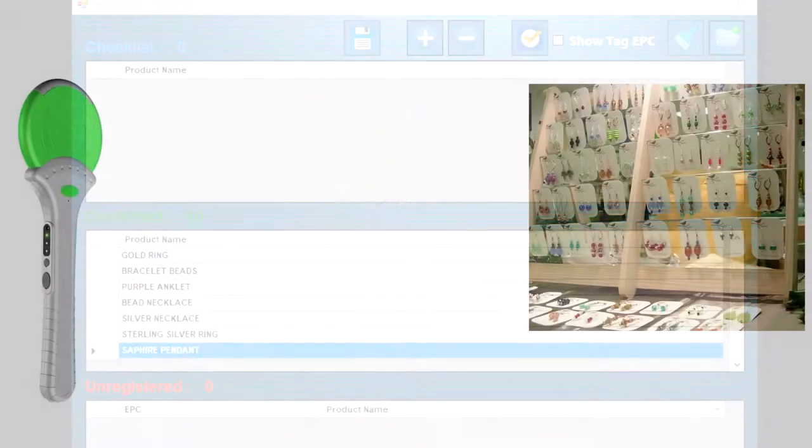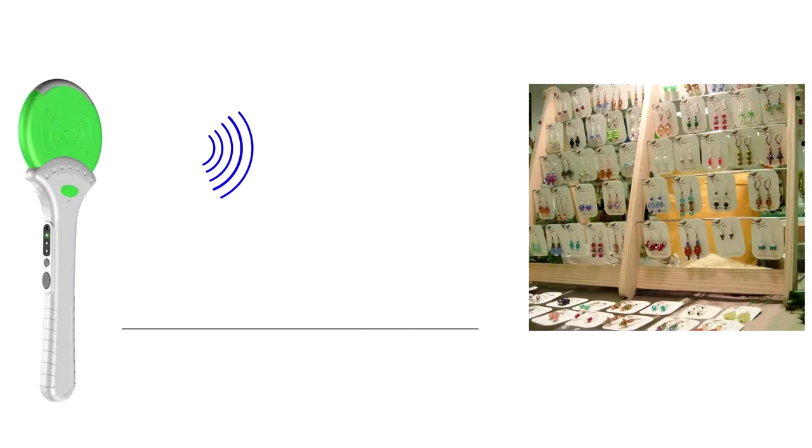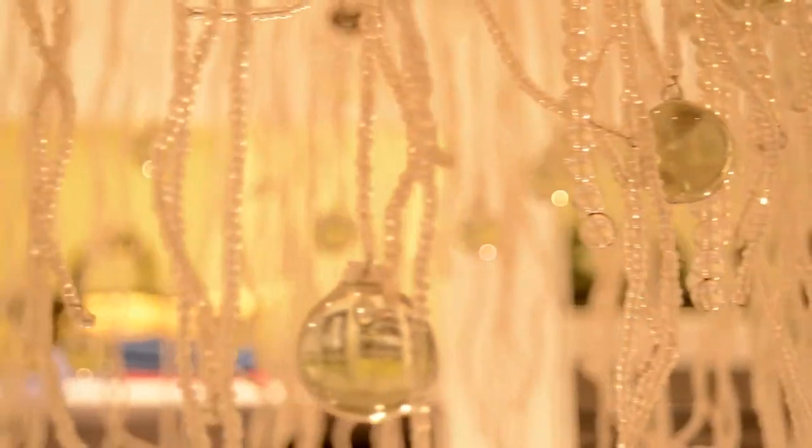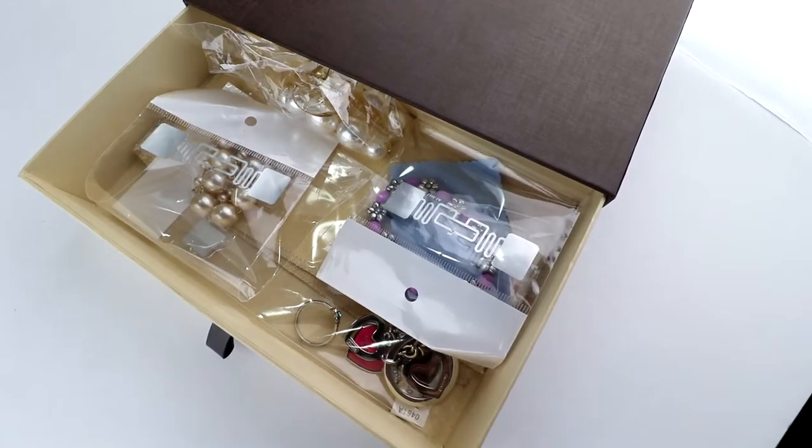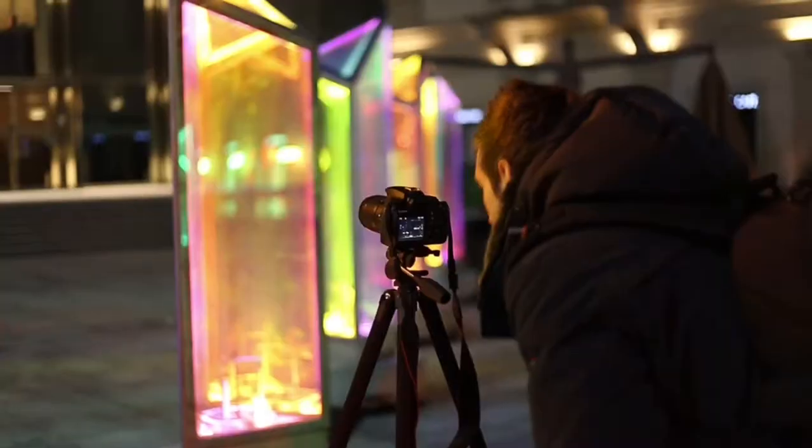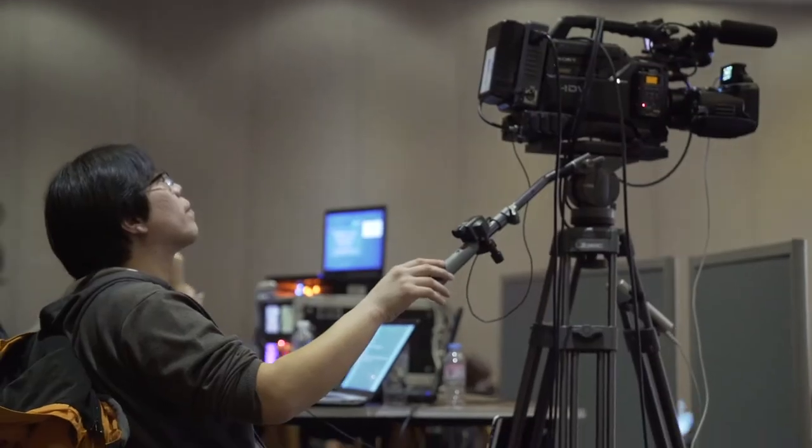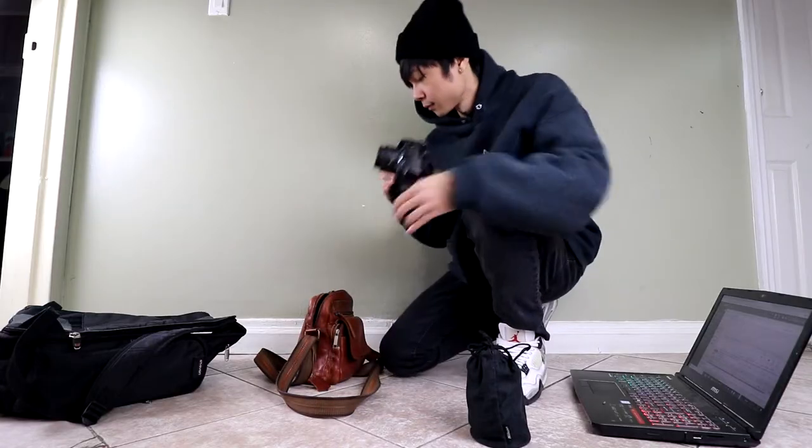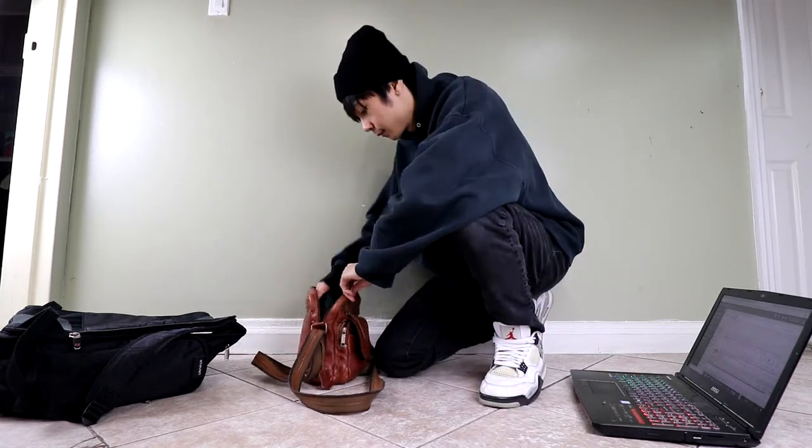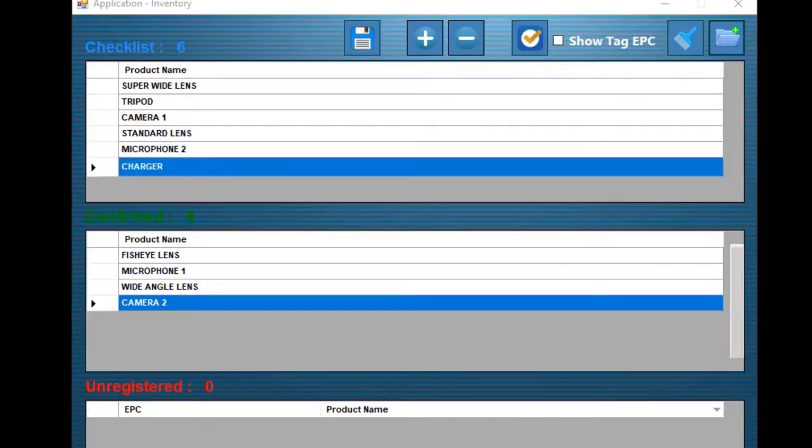The U100 can scan RFID tags up to 10 feet. This is ideal for businesses such as jewelry shops or stores on the go to ensure nothing was stolen throughout the day. This would also be useful for photographers, videographers, or perhaps even construction workers to ensure that no expensive equipment is left behind before leaving the scene of the project.